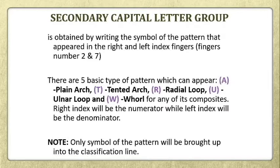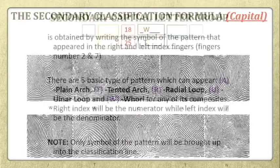Meaning to say, plain whorl, central pocket loop whorl, double loop whorl, or accidental loop whorl will all be represented by letter W. Regardless of what type of whorl you are going to classify, it will be represented by capital letter W. Note: only the symbol of the pattern will be brought up into the classification line. It is very important that you write the letters as capital letters in the secondary capital letter group, because later we will have a different classification for the small letter group.